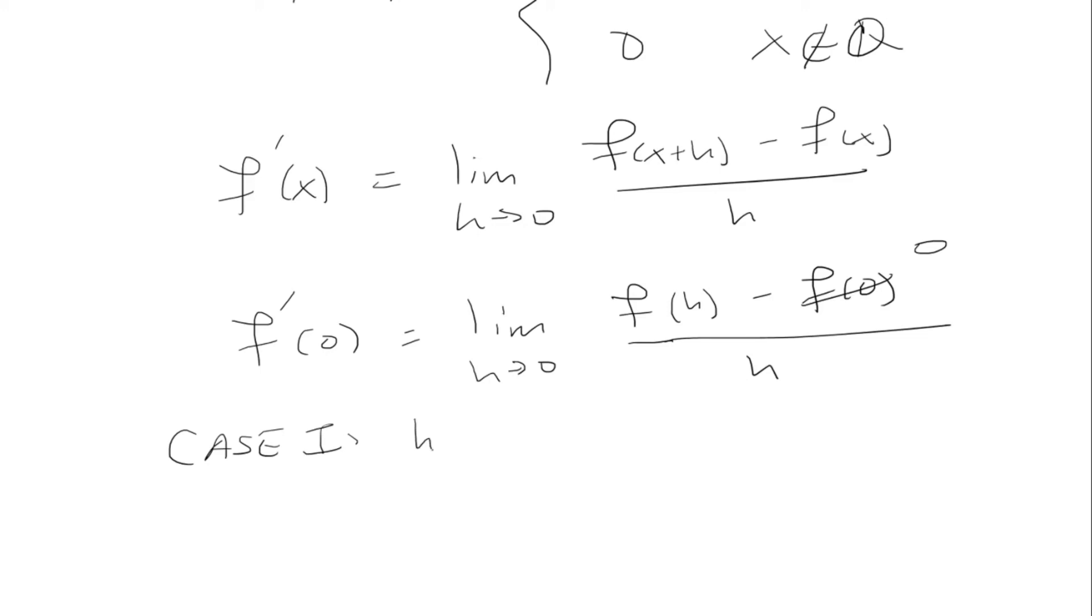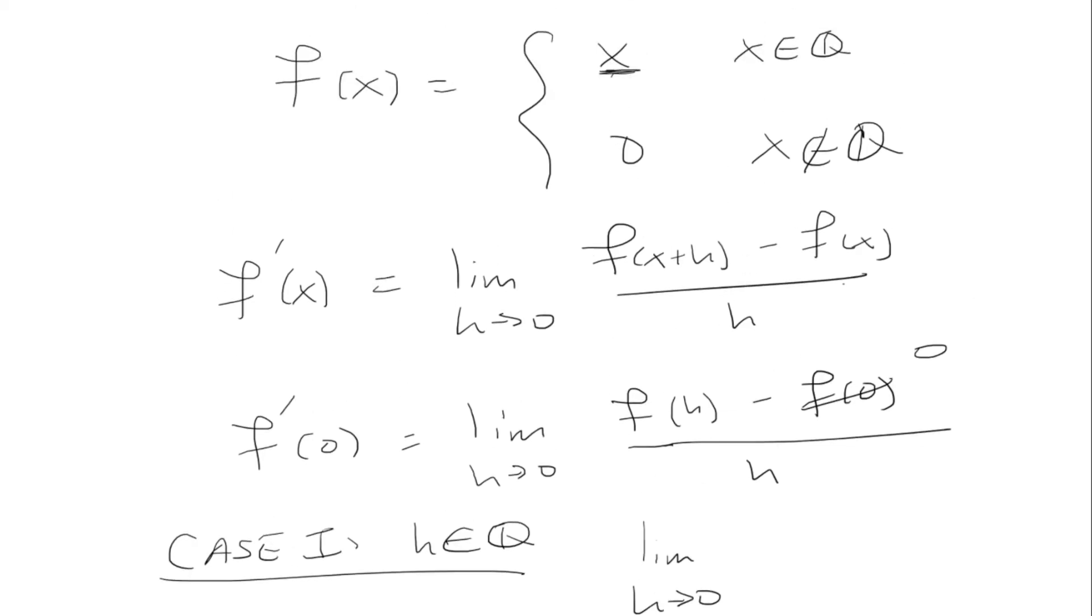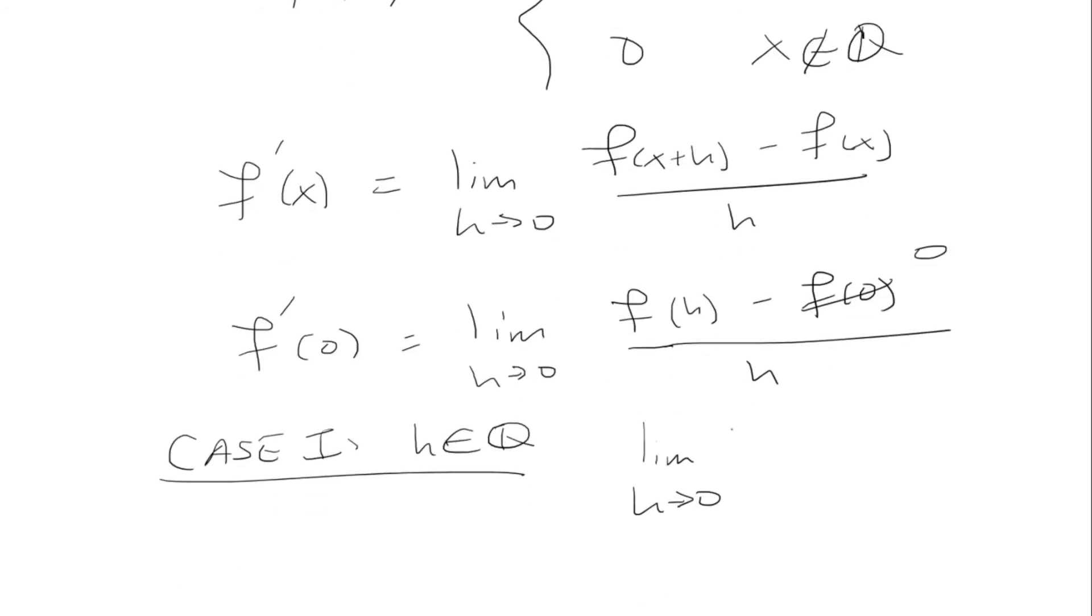Case 1 is if h is rational. We'll have the limit as h approaches 0. Now, f of x we set as x if x is rational. So here f of h is going to be h, which we have h over h, which reduces to just 1. So the derivative here is 1.